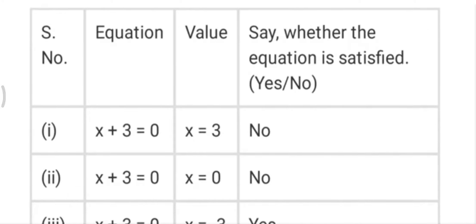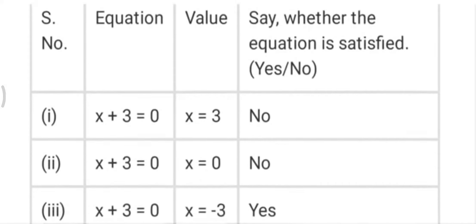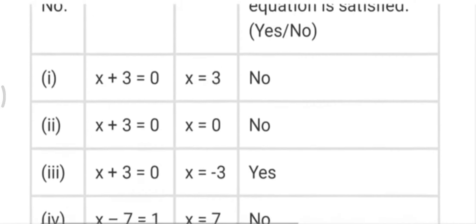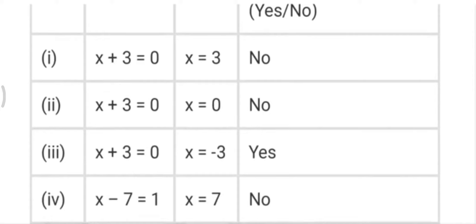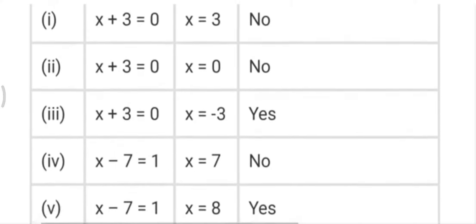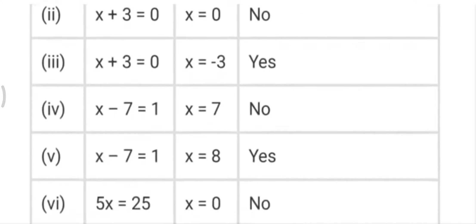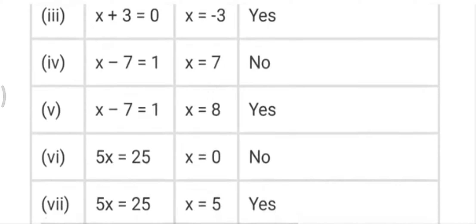Now here you can see the solution of this table. For x+3=0, if we put x=3 then 3+3=6, so it is no. In the second part, if we put x=0, then 0+3=3 which is not 0, so it is again no. In the third part, if we put x=-3 then -3+3=0, so it is yes.